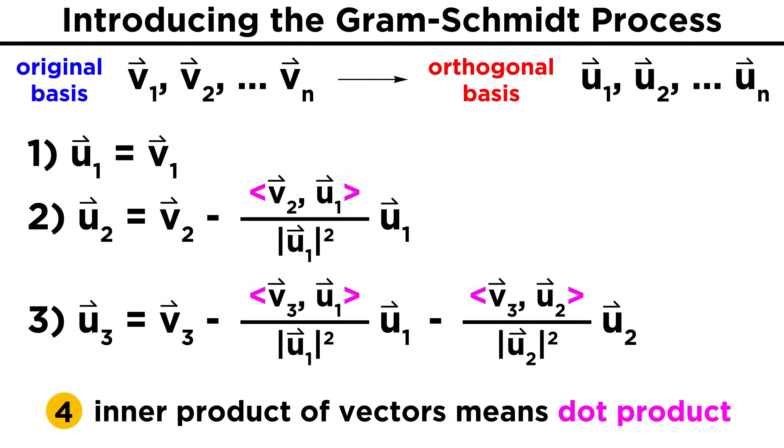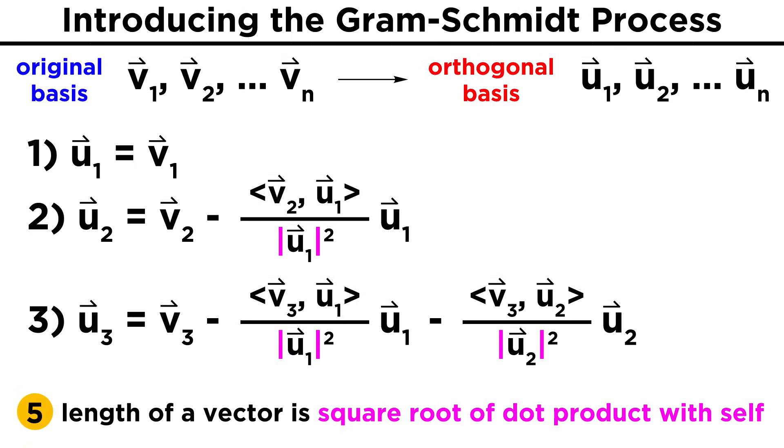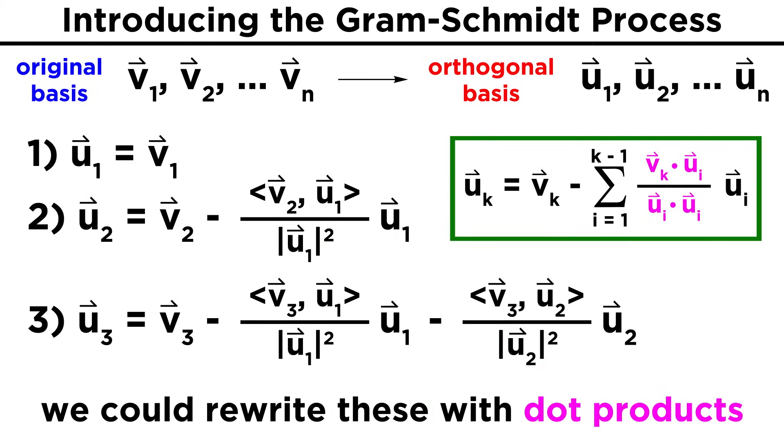For ordinary real vectors, what we mean by inner product is simply the vector dot product. And recall that the length of a vector is simply the square root of its dot product with itself. So just considering this case, we can rewrite these terms with dot products.